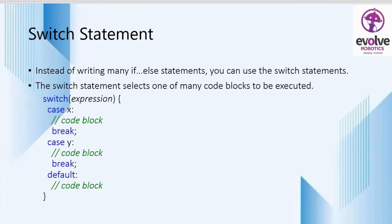The next statement is the switch statement. Instead of writing many if statements, you can use the switch statement. The switch statement allows a variable to be tested for equality against a list of values, where each value is called a case. When the break statement is reached, the switch terminates and flow of control jumps to the next step. The default case can be used to perform a task when none of the cases is true. Here we can see the syntax of the switch statement.